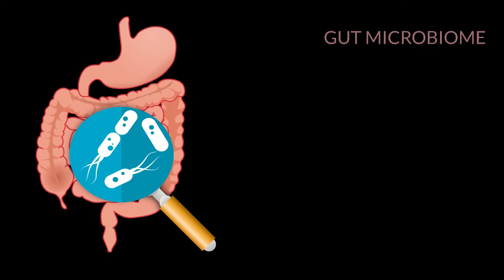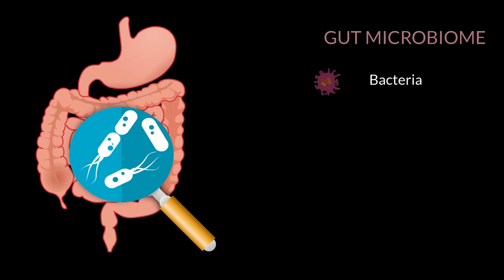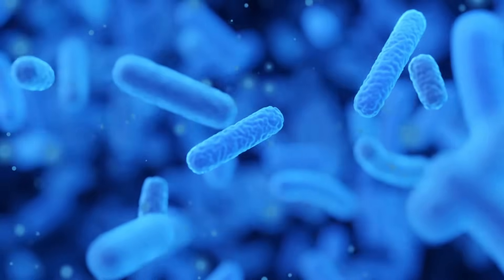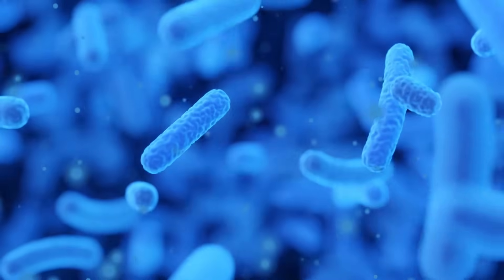Gut microbiome refers to the microbial population of our gut. Initially, this microbial population was largely considered to consist of bacteria, but we now know that others like fungi, viruses and parasites are also normal inhabitants of our gut. We know that there are about 300 to 500 bacterial species alone residing in our gut, so it's safe to say that there is a huge diversity of microorganisms in our gut.